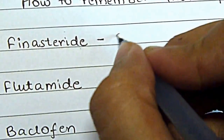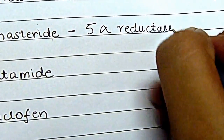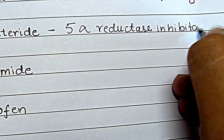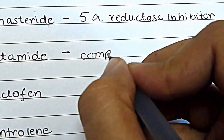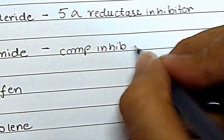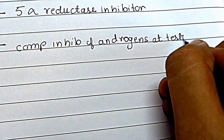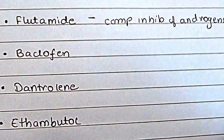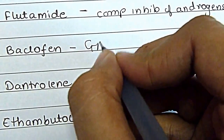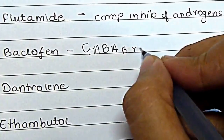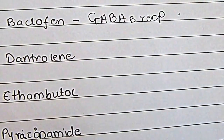For finasteride, I know the mechanism of action is a 5-alpha reductase inhibitor. For flutamide, the mechanism of action is that it is a competitive inhibitor of androgens. For baclofen, I keep forgetting how it works as a muscle relaxant — I look it up and see it's an agonist at the GABA-B receptor.